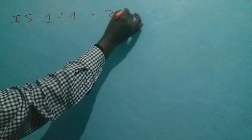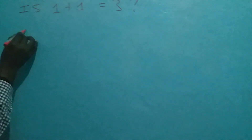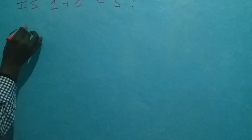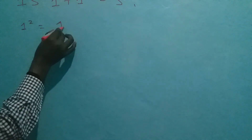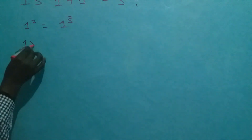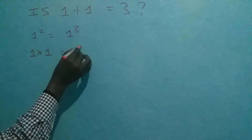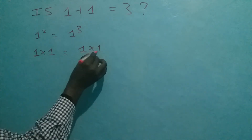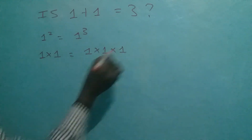Is 1 plus 1 equal to 3? We know that 1 squared equals 1 cubed. 1 squared is 1 times 1, and 1 cubed is 1 times 1 times 1.